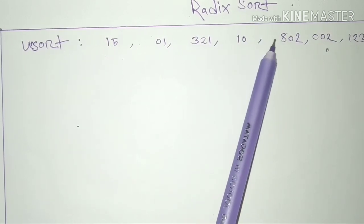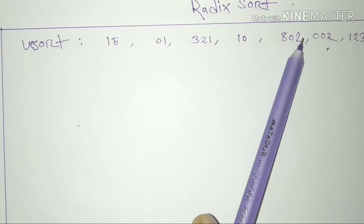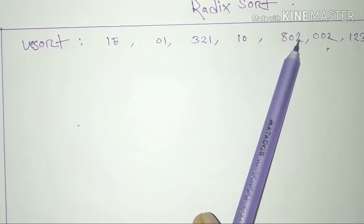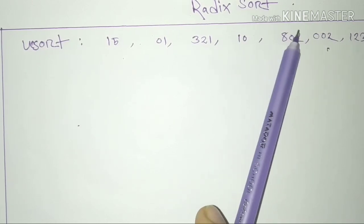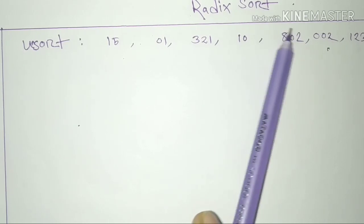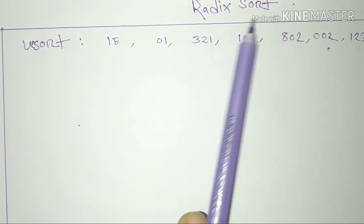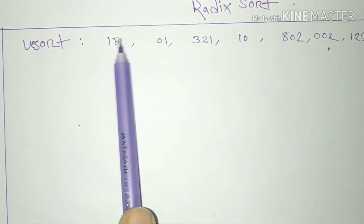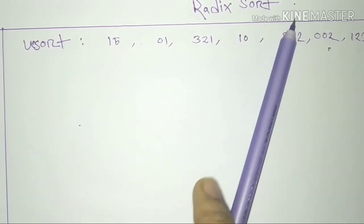So, from there we will see one element at a time. We can see that each value has digits — first digit, second digit, third digit. So if you have 3 digits, you can make 3 passes.